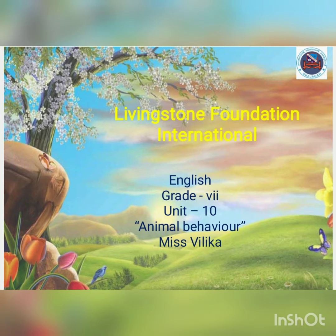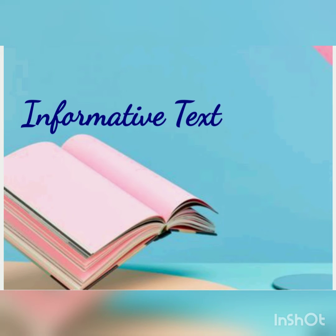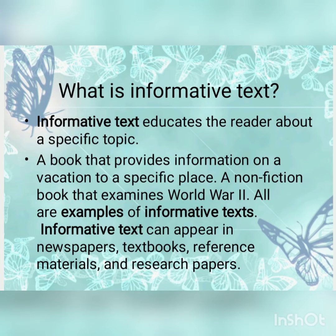Hello students, welcome back to the next English video. Today we'll be discussing Unit 10: Animal Behavior. The topics we will be discussing are informative text, news report, descriptive poem, rhyming scheme, and meter. Let's begin with informative text. Informative text educates the reader about a specific topic.